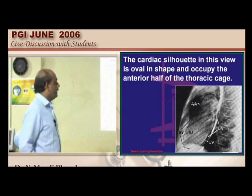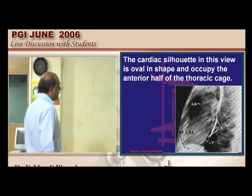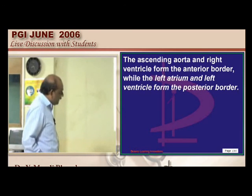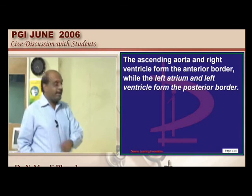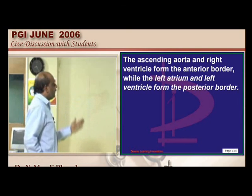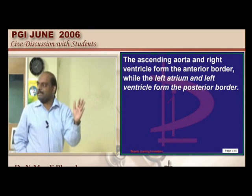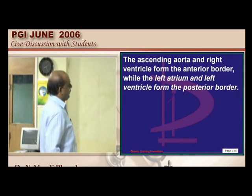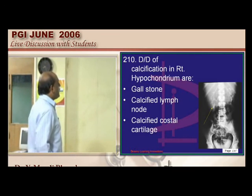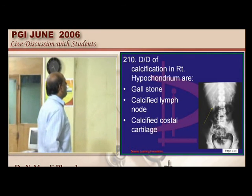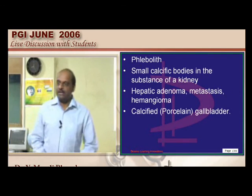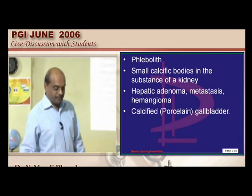On a lateral radiograph, the anterior border is formed by the ascending aorta, right ventricle, and right atrium; the posterior border by the left atrium and left ventricle. The esophagus is posterior. In mitral stenosis, left atrial enlargement can compress the esophagus, causing dysphagia. Right upper quadrant calcification differentials include gallstone, calcified lymph node, calcified costal cartilage, kidney calcification, hepatic adenoma, and porcelain gallbladder.